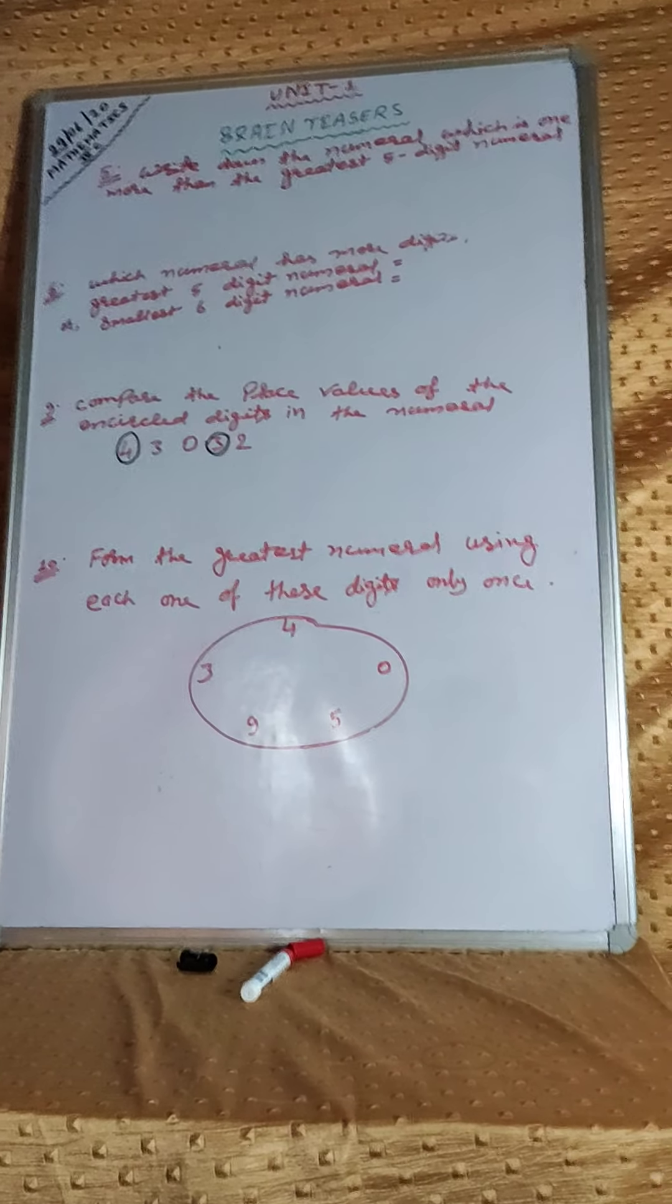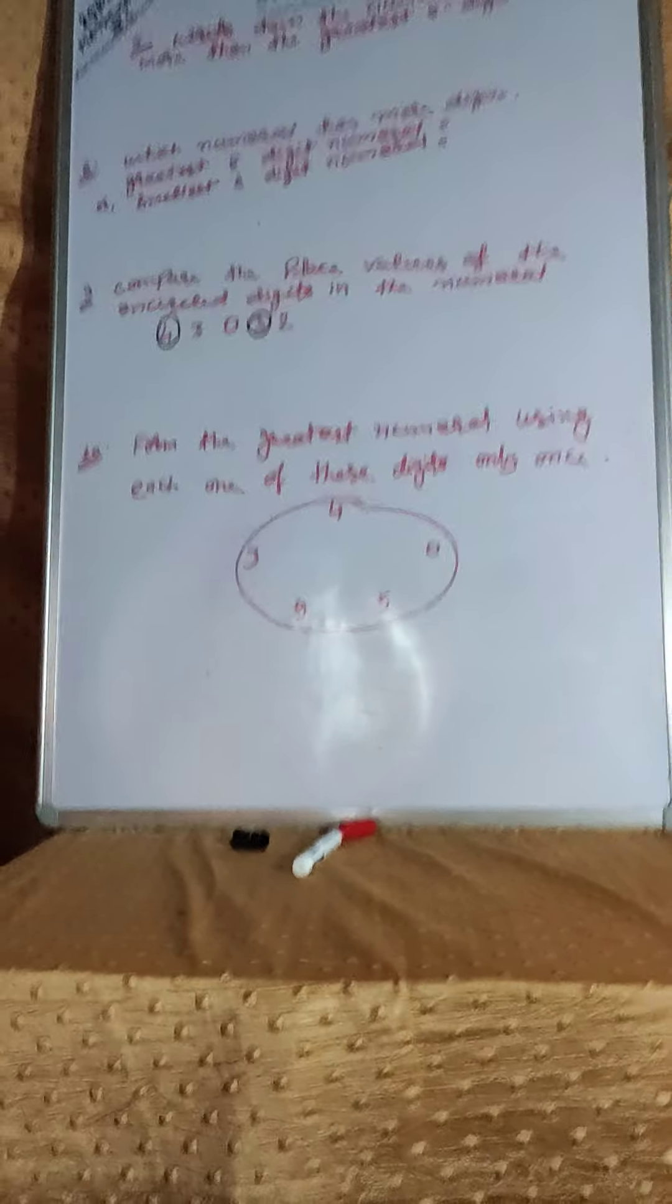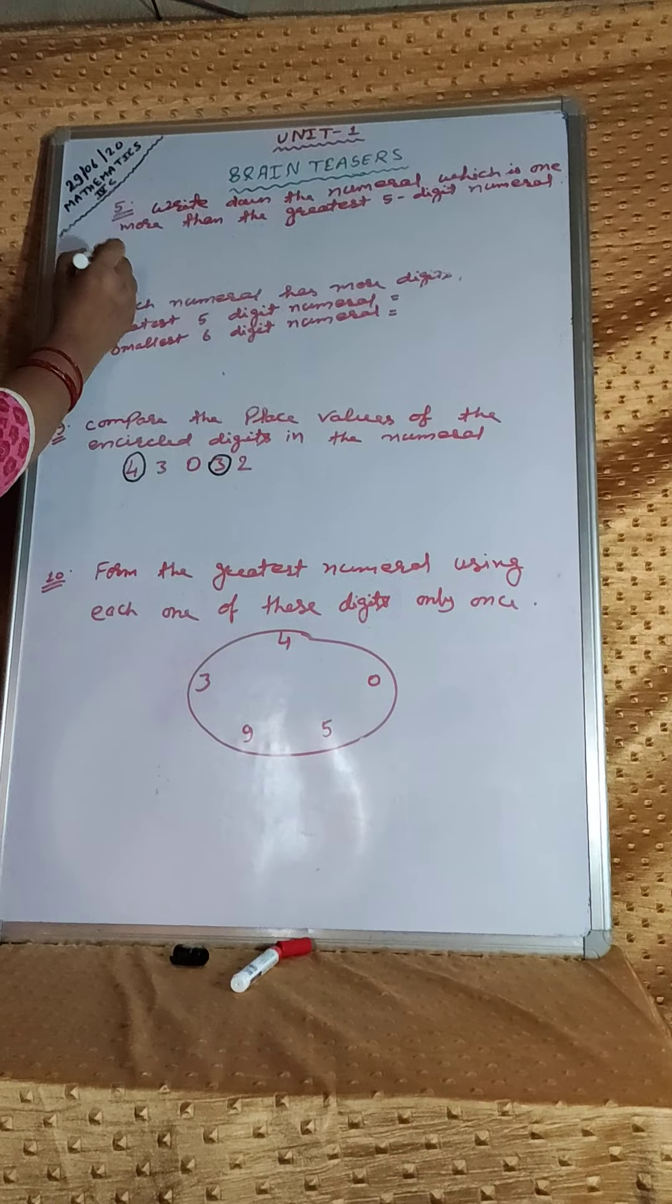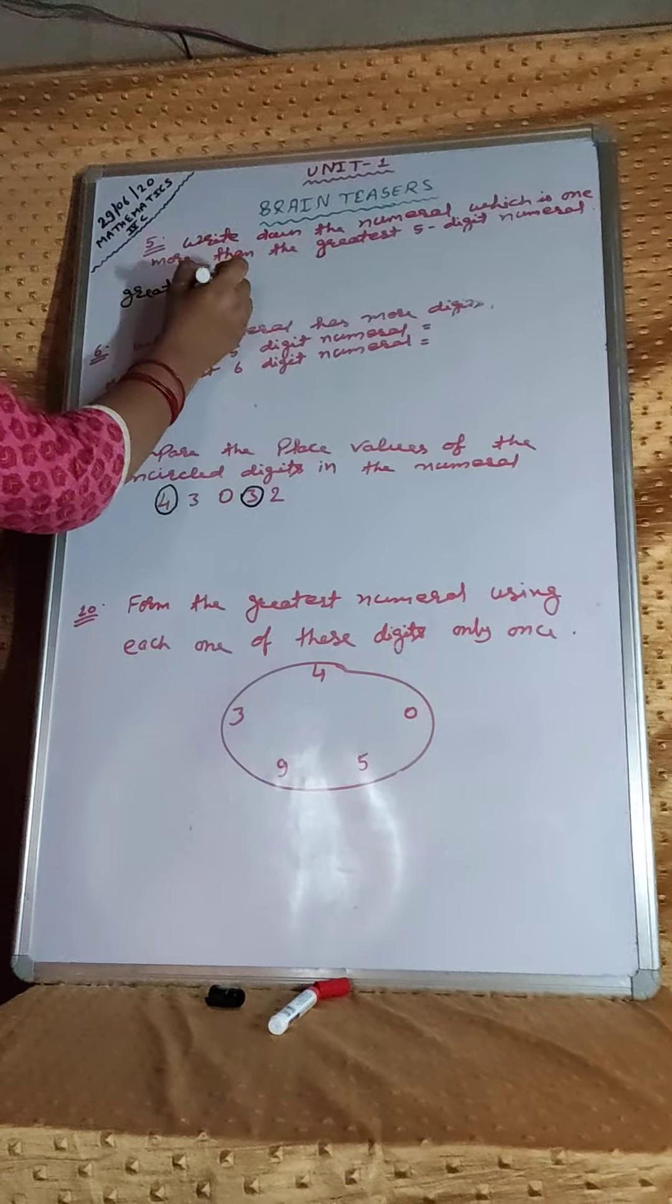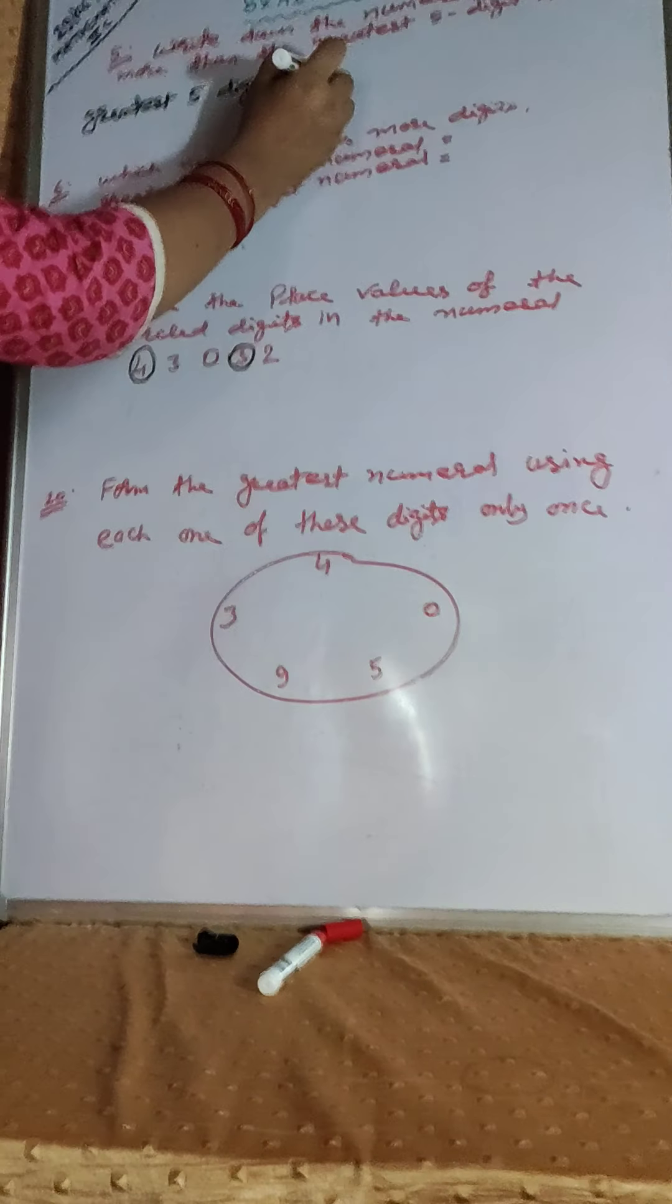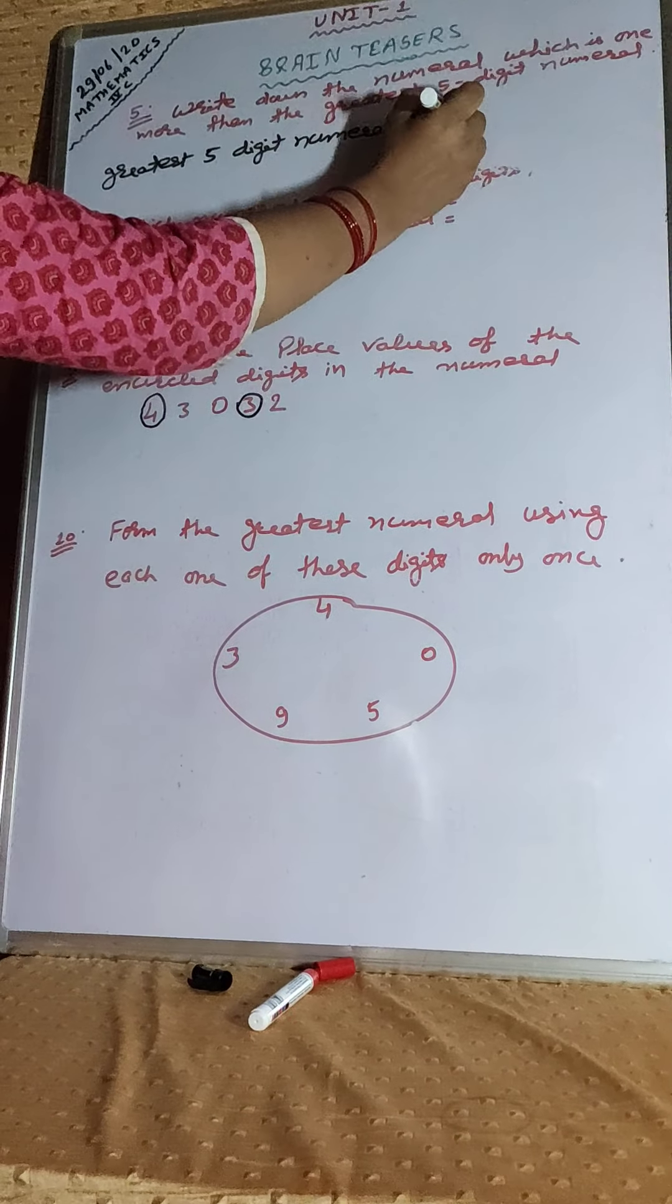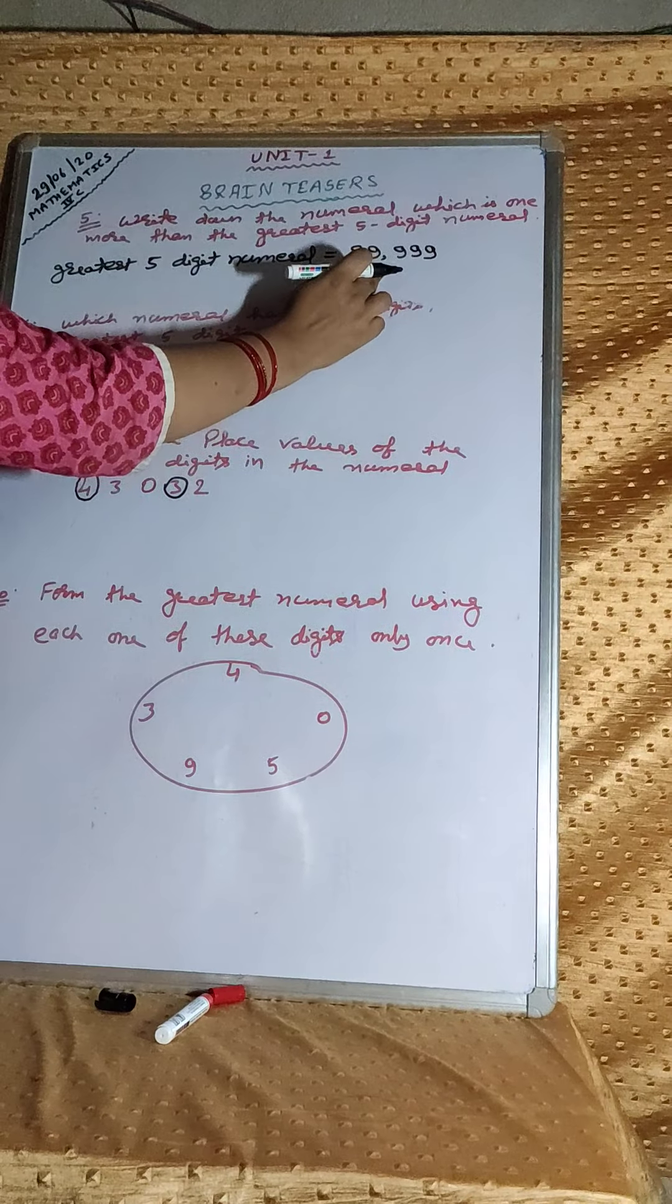Now, we will solve question number 5. Write down the numerator which is 1 more than the greatest 5 digit numerator. At first, we will write the greatest 5 digit numerator.